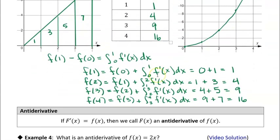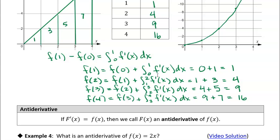That brings us to - I kind of already mentioned what an antiderivative is. Essentially, if F'(x) = f(x), then we call F(x) an antiderivative of f(x). We're just taking derivatives in reverse. To find an antiderivative, we're reversing the process of taking the derivative.